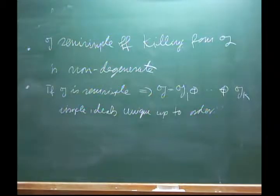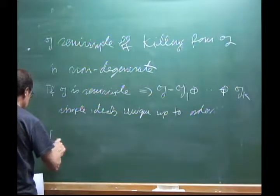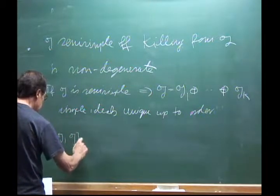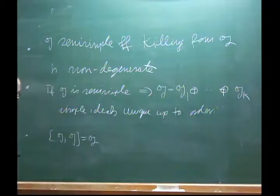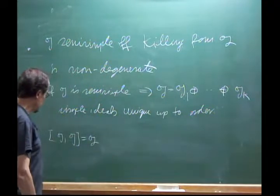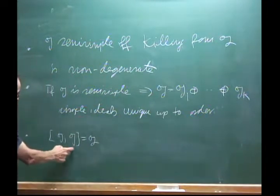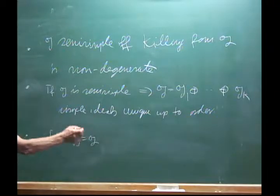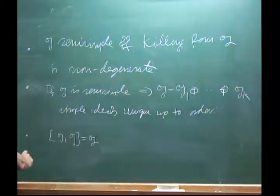In particular, every simple ideal of G is one of those. The next statement was that G comma G is equal to G, which follows because for a simple Lie algebra the commutator is an ideal. If it's zero it's abelian, and that's not allowed for a simple one, so it must be everything.